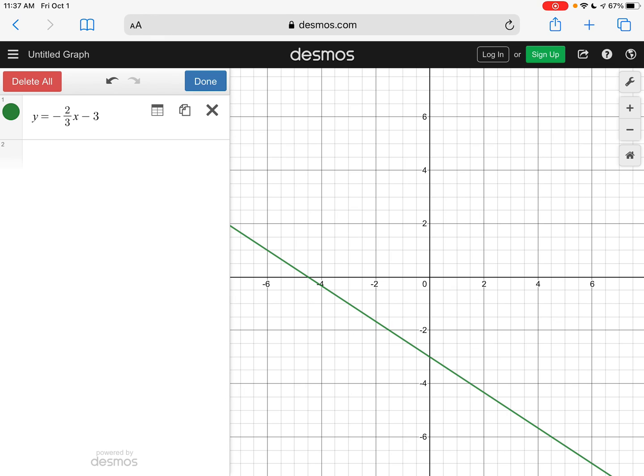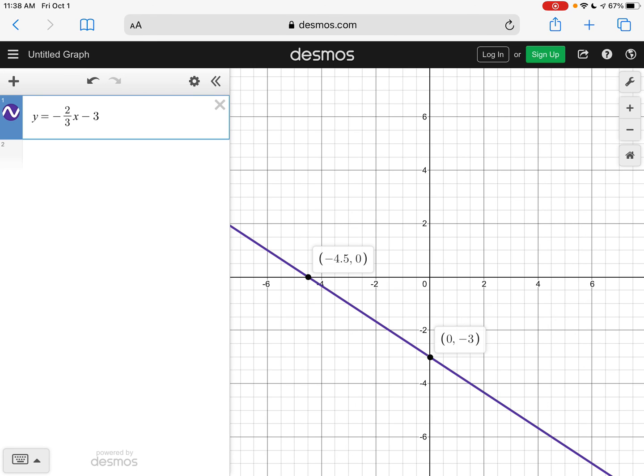If you want to change it you could hit this little settings gear and you could change the color, you could change it to be a dashed line or a dotted line. You can do all those things right here in Desmos. Again if I wanted to know my x-intercept I could click on that point and it will tell me that my x-intercept is at negative four point five zero, and my y-intercept is at zero negative three.